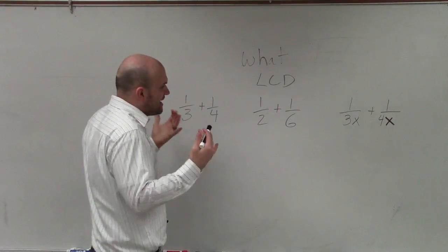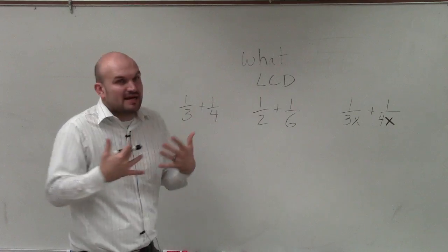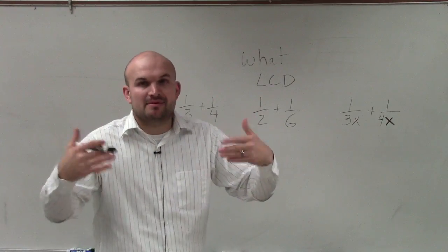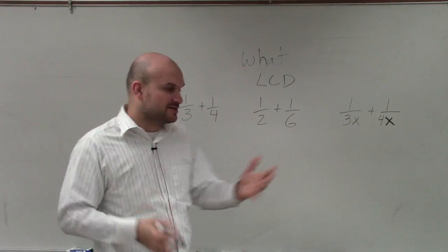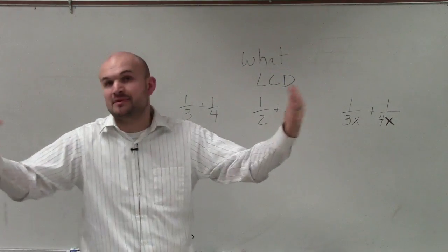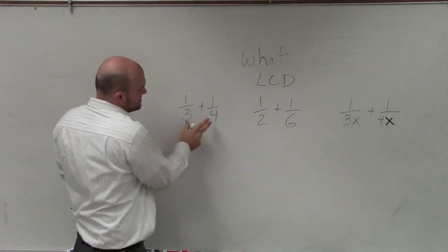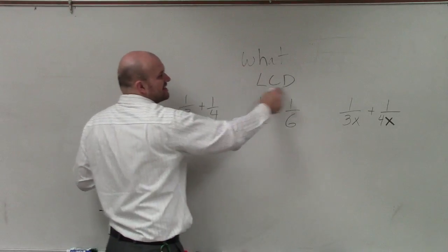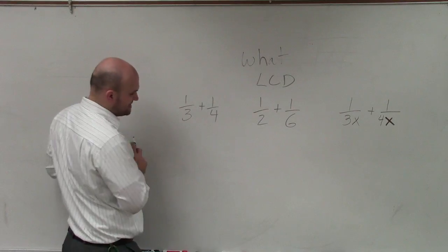When we're talking about common denominators, basically what we're doing is saying what is the least common multiple of our denominators. So we interchange LCD with LCM, which is the least common multiple, but we're looking for the least common multiple of our denominators so that's why sometimes we swap it in as LCD.